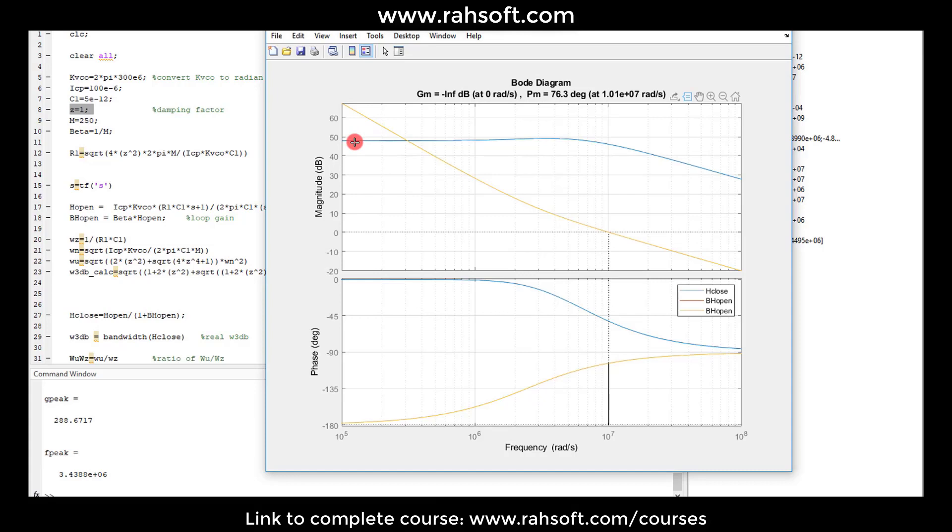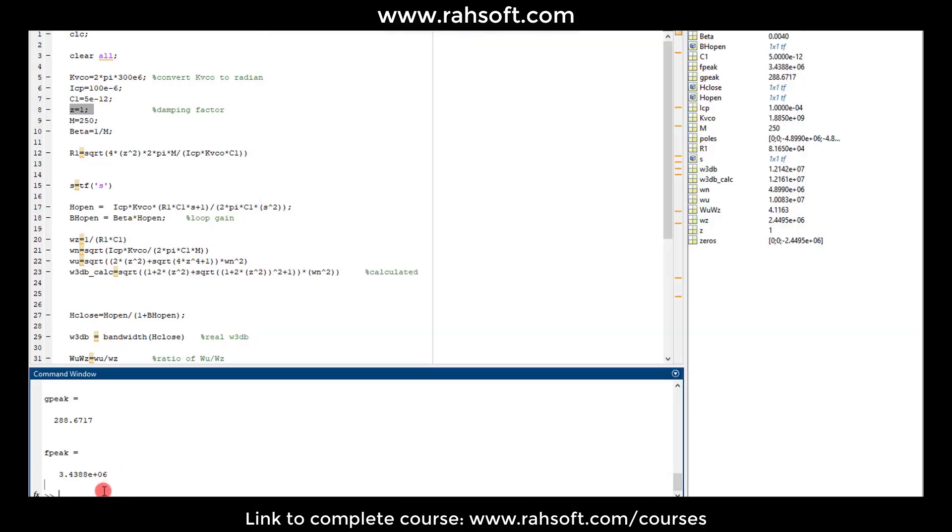So the DC gain should be equal to M which is 250. And if we calculate the 20 log of that, because this is on dB, log 10 of... sorry, 250.